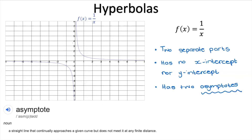We can see that x = 0 — the y-axis — is an asymptote. This is a vertical asymptote because the graph will never cross the y-axis.